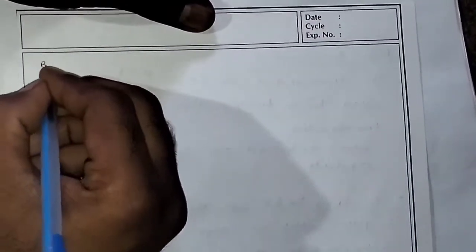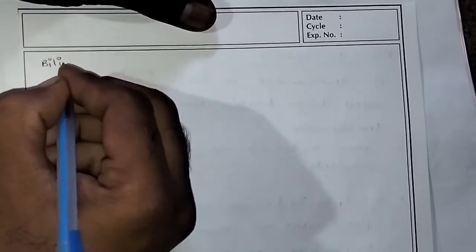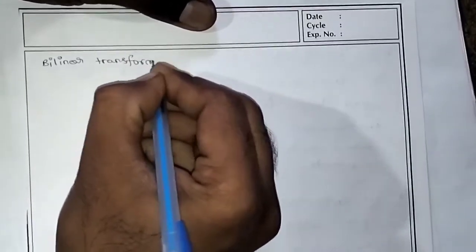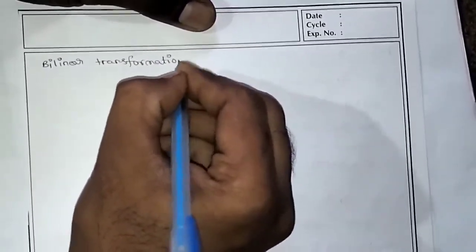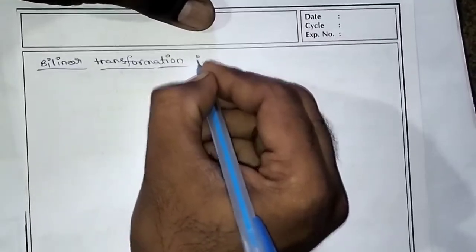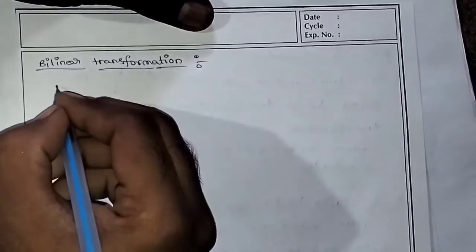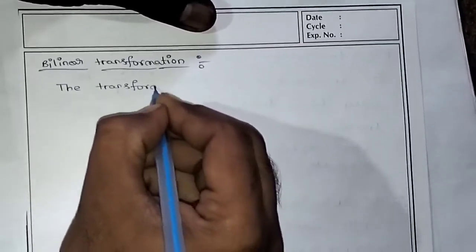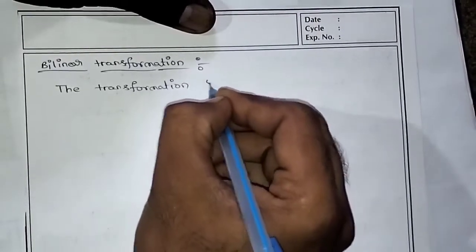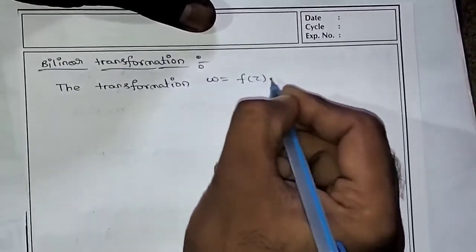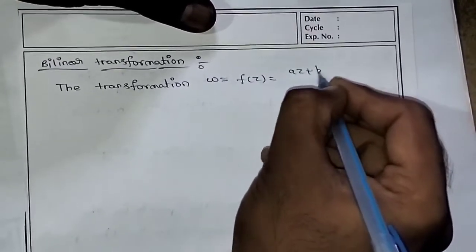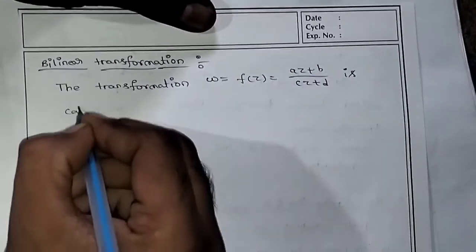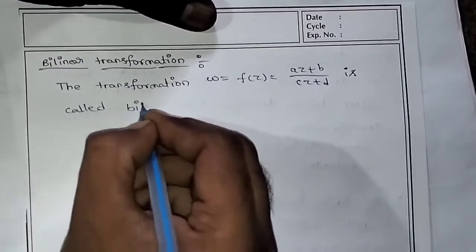Bilinear Transformation. Bilinear Transformation means the transformation W equal to F of Z, equal to Az plus B by Cz plus D, is called Bilinear Transformation.